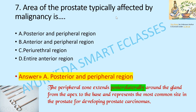Area of the prostate typically affected by malignancy: the posterior and peripheral region. The peripheral zone extends posterolaterally around the gland from the apex to the base and represents the most common site in the prostate for developing prostate cancer.